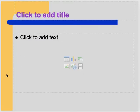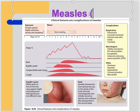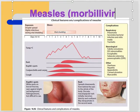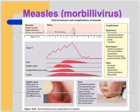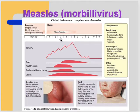Measles is caused by morbillivirus. The incubation period is around 10 to 14 days. It is an airborne, highly infectious condition - that's why vaccination is given. Patients are infectious four days before and four days after the rash, up to day eight.